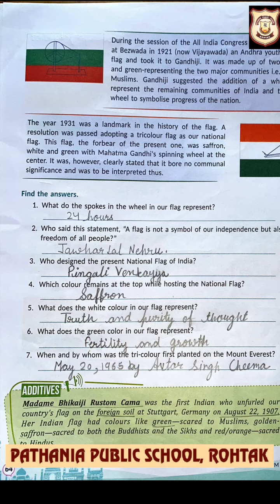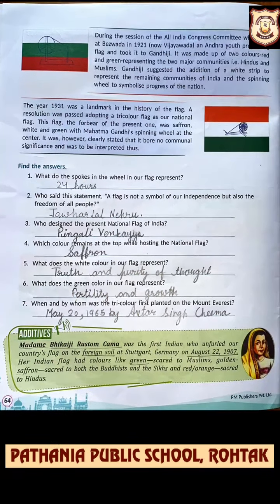What does the white color in our flag represent? White color represents truth and purity of thought. When and by whom was the tricolor first planted on Mount Everest? The national flag was hoisted on Mount Everest on May 20, 1965 by Avatar Singh Cheema. You need to do these additives also.